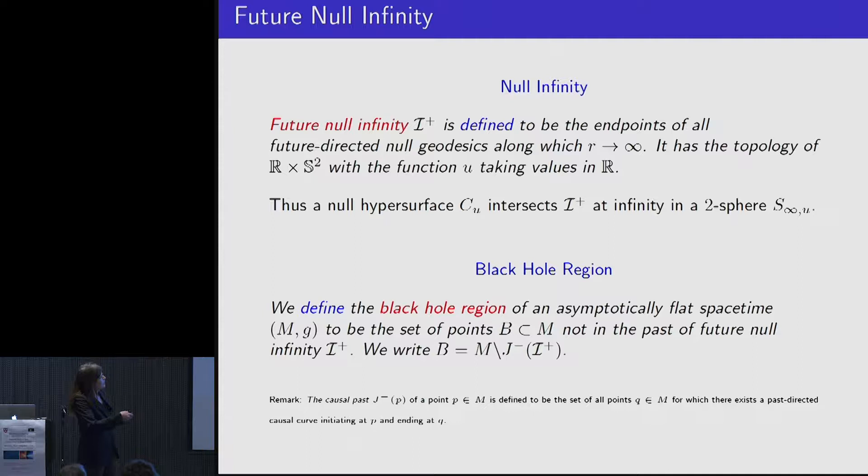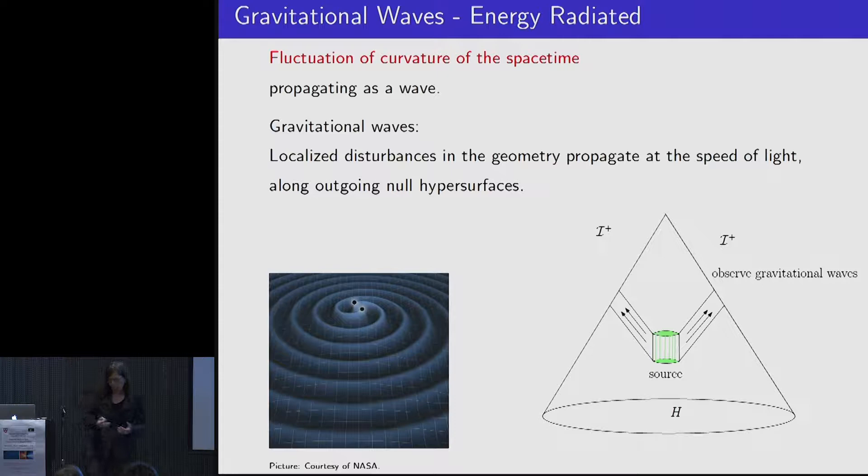When I say null infinity, what I mean is I'm sitting on a null hypersurface, a light cone, and I go out to null infinity. There are some curvature components, some physical quantities that will have limits there, and I can read off something about the radiation field. The black hole region, we have heard that several times today, so from a black hole nothing can go out to null infinity, so I can define it in that way.